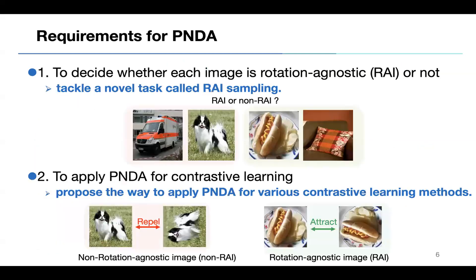To achieve PNDA, two steps are required. The first is to decide whether each image is rotation agnostic (RAI) or not. The second is to apply PNDA for contrastive learning. For the first, we tackle a novel task called RAI sampling. For the second, we propose a way to apply PNDA for various contrastive learning methods.